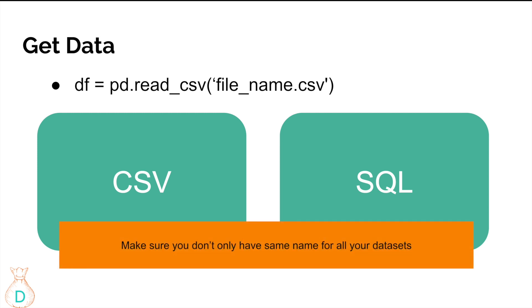When you manipulate data, be very careful not to always name your dataframe the same thing like `df`. Here `df` stands for data frame — if you always override with the same name, you won't be able to backtrace what the data looked like before a manipulation. This helps you avoid bugs in your process, so definitely don't name all your datasets the same name like `df` or `data frame`.